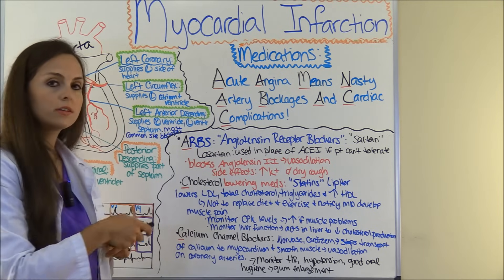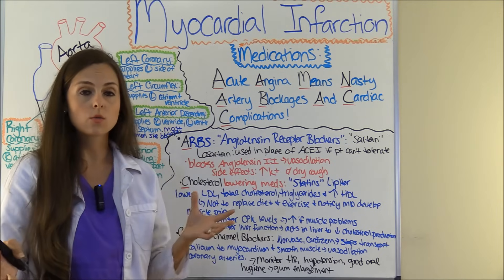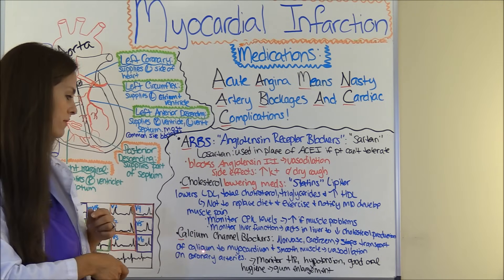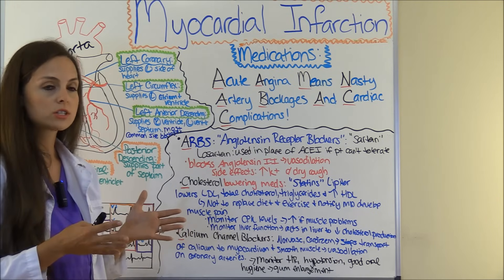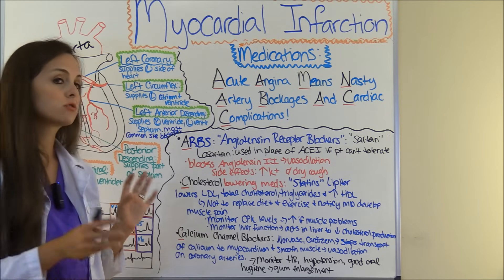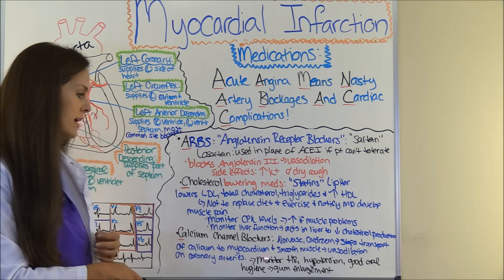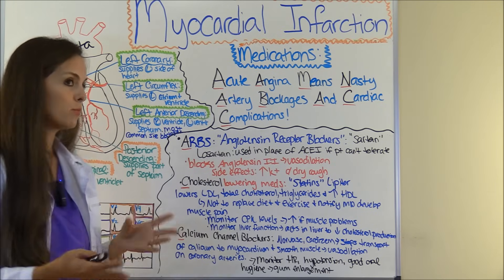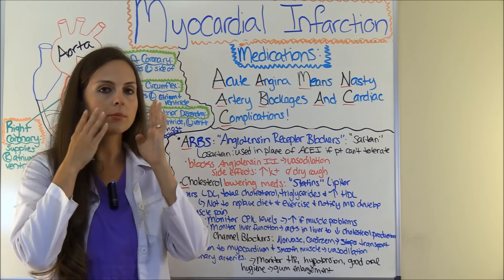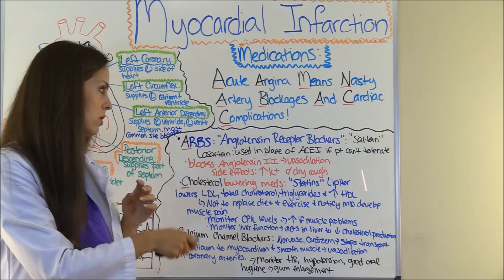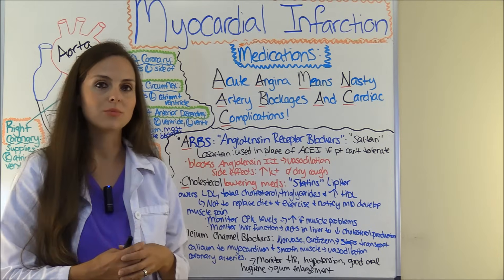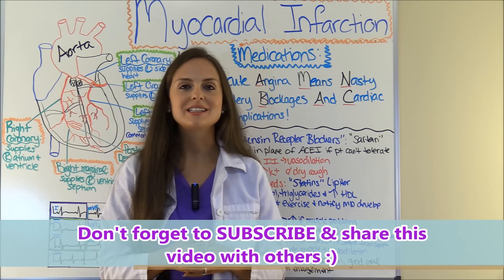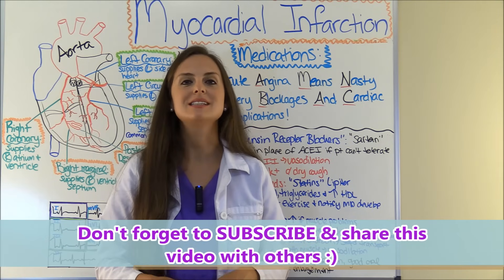The last C in the mnemonic is calcium channel blockers — such as Norvasc or Cardizem — which work by stopping the transport of calcium to the myocardial and smooth muscle, causing vasodilation of the coronary arteries that feed blood to the heart. As a nurse, monitor for hypotension and monitor heart rate. Also educate the patient that this drug can cause gingival hyperplasia — enlargement of the gums — so good oral hygiene is important. That is part two of myocardial infarction. Be sure to check out part one, take the quiz, and thank you for watching — please consider subscribing.